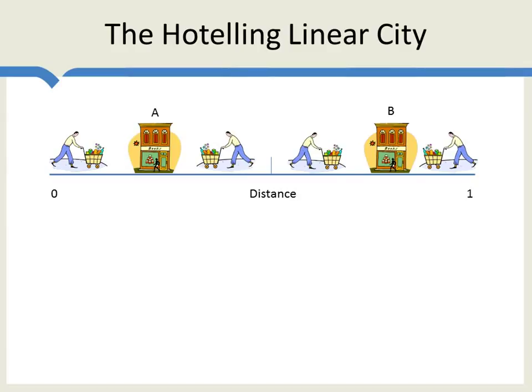This is a very simple setup, but notice that location can be understood in more abstract ways other than literal distance. We might interpret this as left to right politically, or we might interpret this location as being in an abstract space of sweetness, where less sweet products are located over here and more sweet products are located over here. So this model of Harold Hotelling is going to be interpreted in a number of different ways.